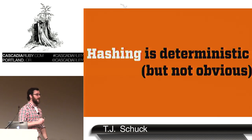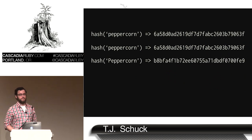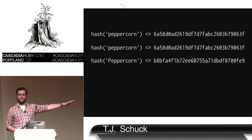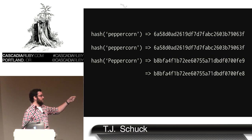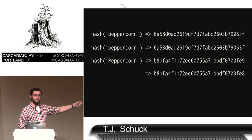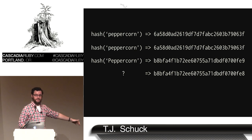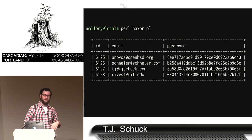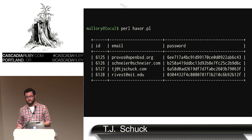It's also important that it's deterministic but not obvious. Peppercorn hashed gives the same output every time, but if you trivially change the input — say you capitalize peppercorn — the output is completely different. And if you have outputs that are just trivially different, you have no way of telling what the input is. So this is great — all our problems are solved. We just hash all of our passwords and now anyone with a dump can't reverse them back to plain text.